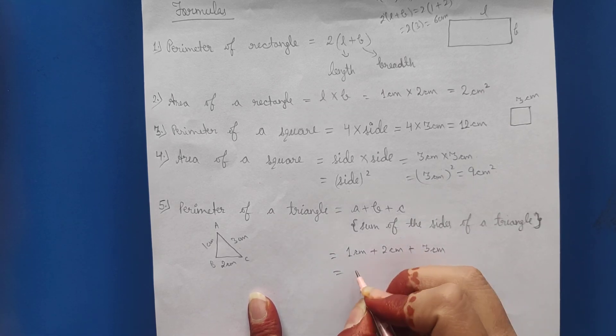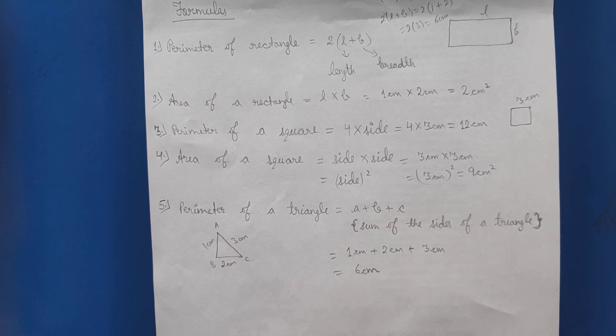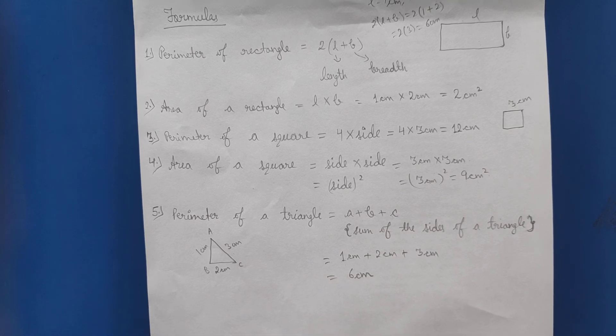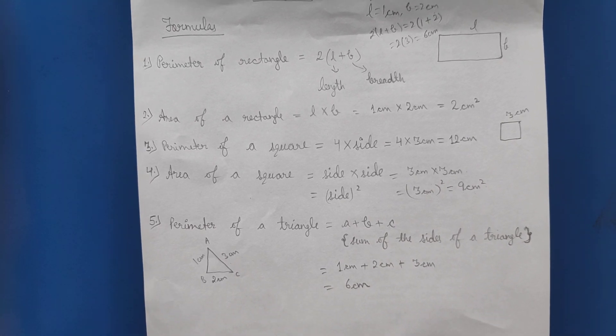So the perimeter will be 2 plus 1 is 3, 3 plus 3 is 6 centimeter. So the perimeter is 6 centimeter. Okay students, clear?